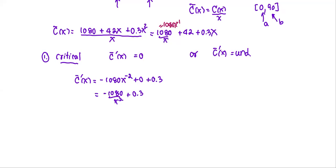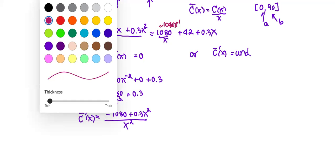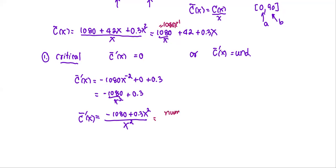Since we have two terms, we simplify into a single fraction: C̄'(x) = (-1080 + 0.3x²) / x². In this fraction form, we can identify: C̄' = 0 when the numerator equals 0, and C̄' is undefined when the denominator equals 0. So the case C̄' = 0 means the numerator equals 0.